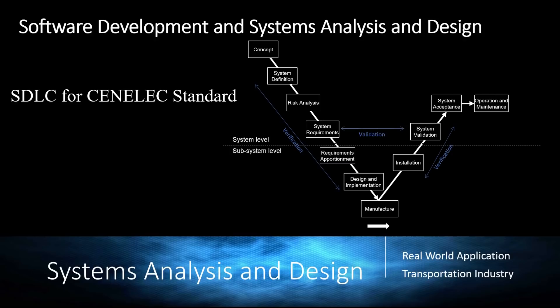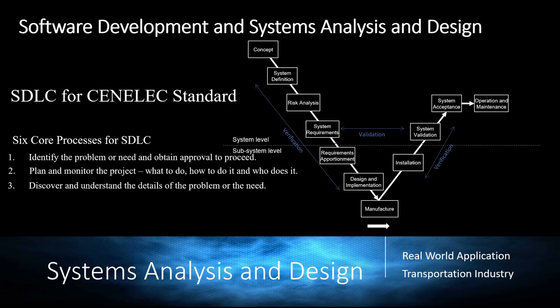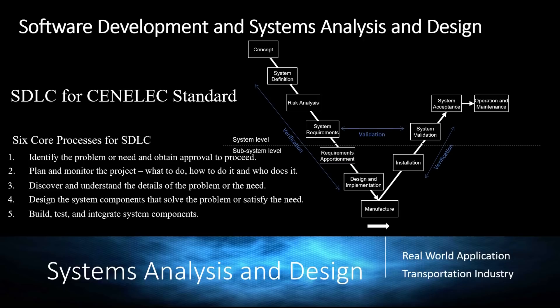Comparing the six core SDLC processes to the Cenelec V-model: step one — identify the problem or need and obtain approval — falls under concept. Step two — plan and monitor the project — falls under system definition. Step three — discover and understand the details — falls under risk analysis. Step four — design the system components — maps to system requirements. Step five — build, test, and integrate system components — maps to system validation. Step six — complete system tests and deploy the solution — falls under system acceptance, operation and maintenance, and deployment.